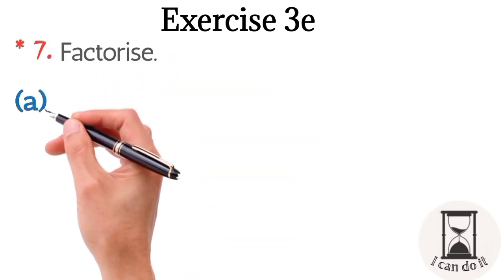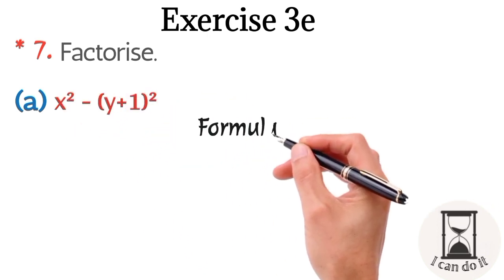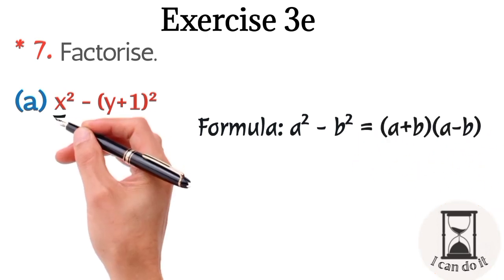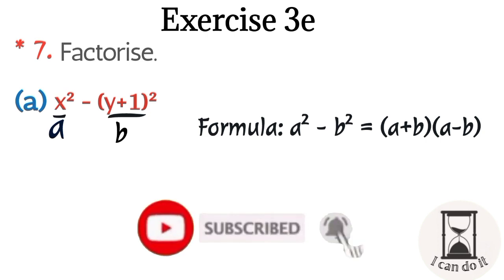x squared minus (y plus 1) whole square. You must know the formula a squared minus b squared equals (a plus b) into (a minus b). Here x squared is a and (y plus 1) whole square is b. Now you just have to put them in the formula.